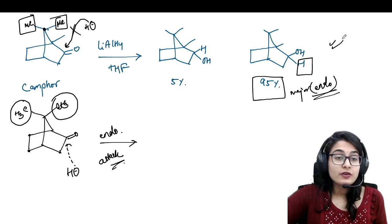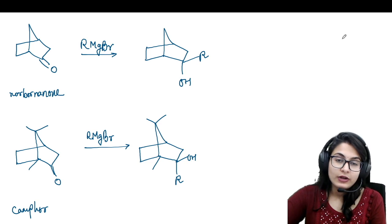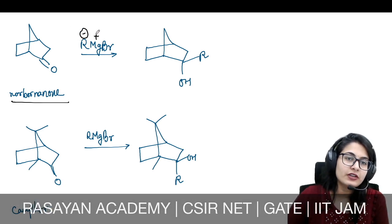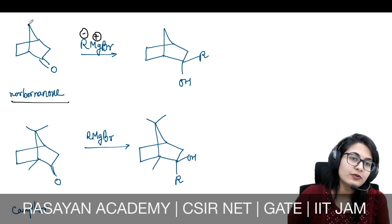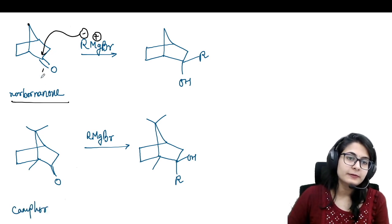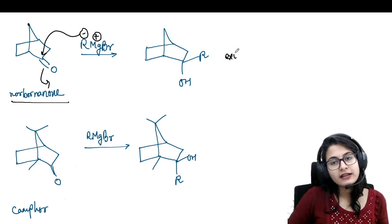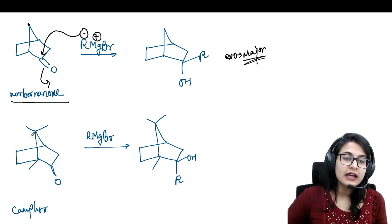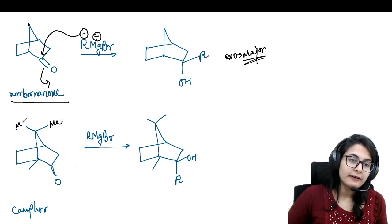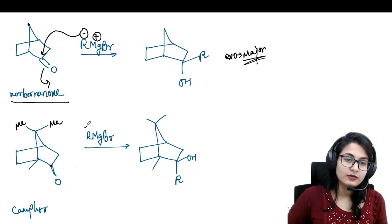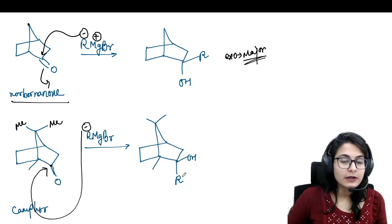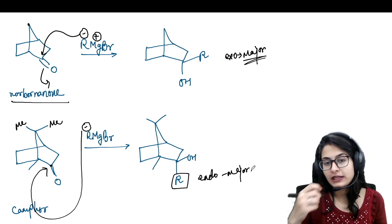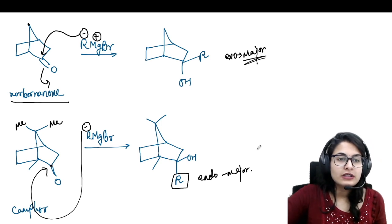Moving on, we have the norbornone system with a Grignard reagent attacking it. Grignard is a nucleophile and if there is only one carbon bridge it will attack from above, with OH going below — this is your exo attack and major product. Similarly in the camphor molecule with two methyls, the attack is from below (endo) and OH goes above. This was about attack on the carbonyl, which is a single sp2 carbon.